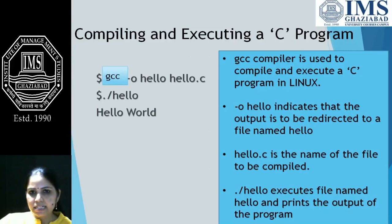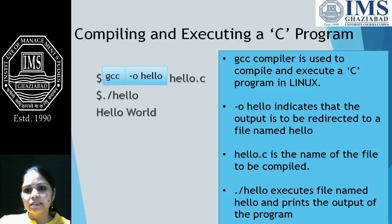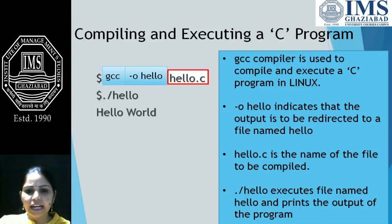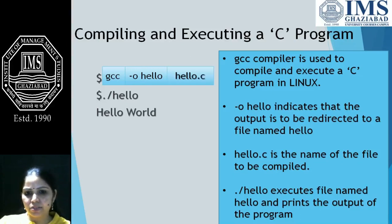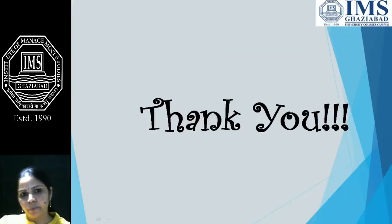To summarize: gcc is the compiler for executing in Linux. Minus o hello is the file where our output is redirected. Hello.c is the name of the file to be compiled and executed. And dot slash hello is the way to execute the file named hello. Thank you and have a nice day.